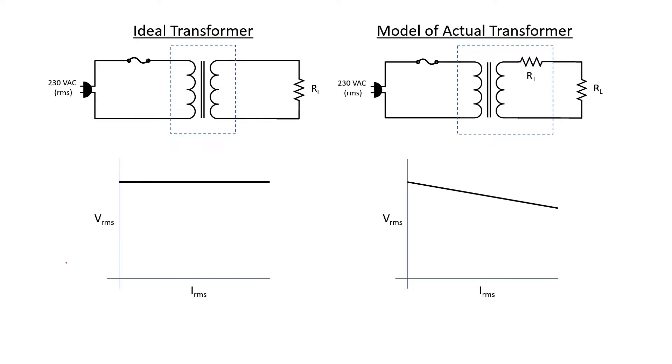If you've watched my video on non-ideal transformers, you might recall that we can model the output side of a transformer as having a series resistance there with the load. This causes the voltage to start to fall as more and more current is drawn through the secondary side of the transformer.